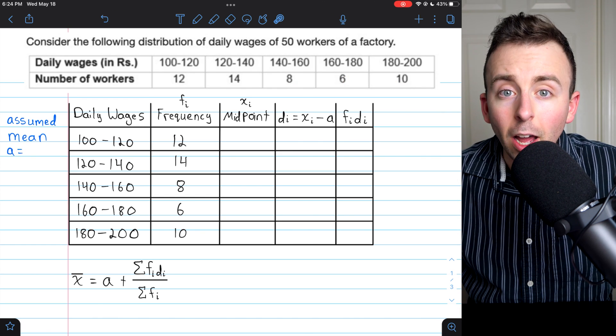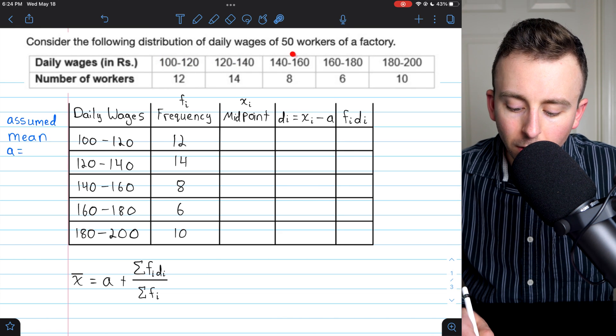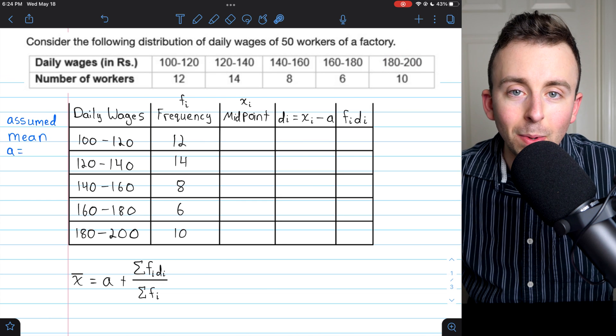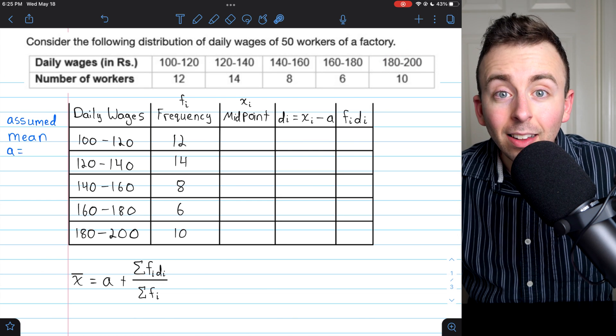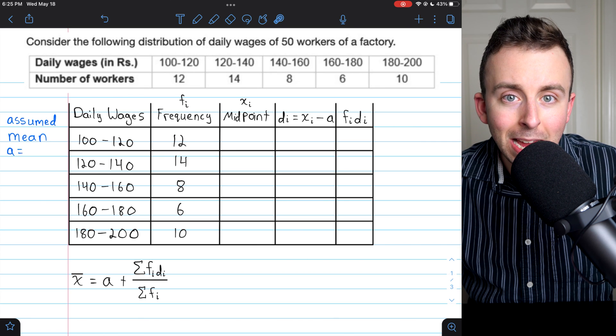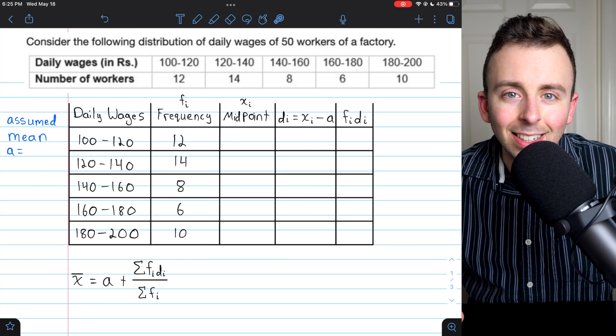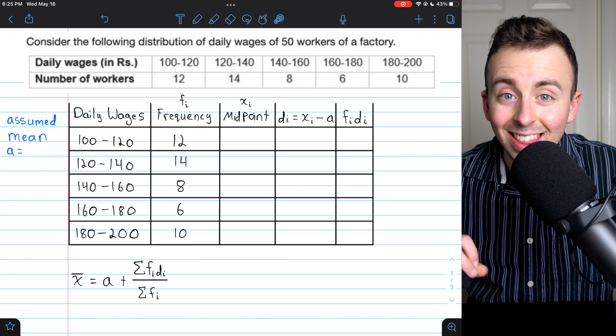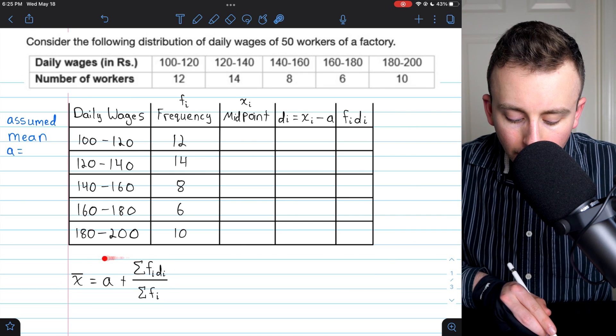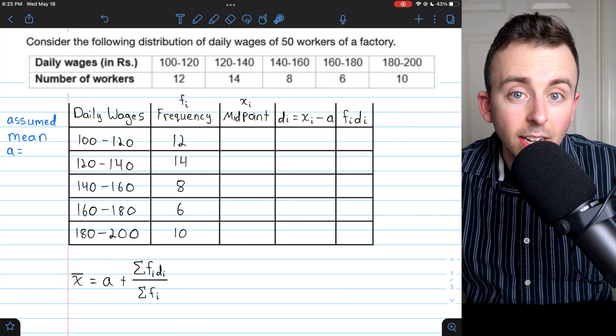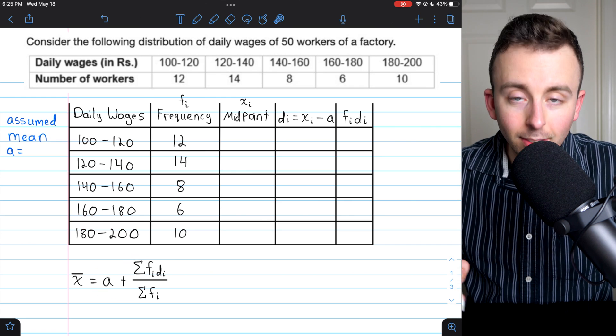Now, as far as calculating a mean by hand goes, these numbers in the intervals are pretty big. Those could be a bit of a pain to calculate by hand. And that's a reason to use the assumed mean method. For calculating a mean by hand, the assumed mean method can sort of simplify the arithmetic that we have to do. This here is the formula for calculating the mean using the assumed mean method. Let's talk about the pieces of this formula.